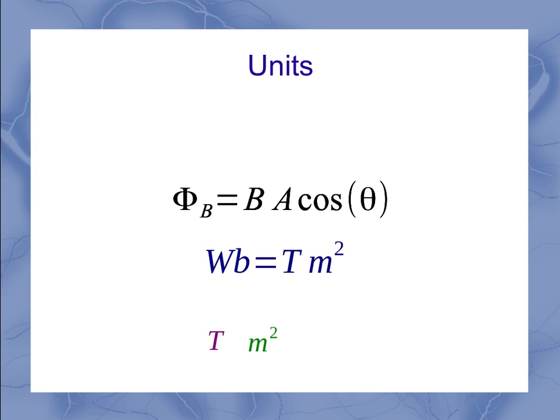So that means if I take everything together, flux has units of Tesla meter squared. And we sometimes give that a new symbol, Wb, which stands for a Weber. So you can represent magnetic flux either as Tesla meter squared or as Webers.